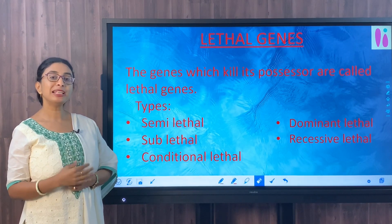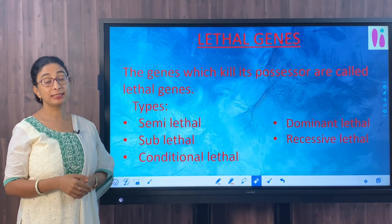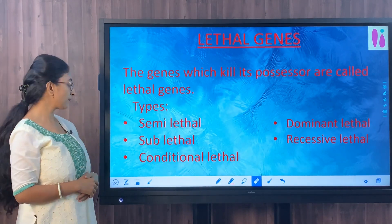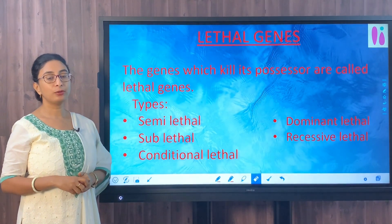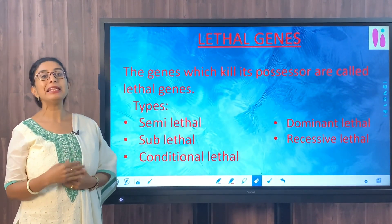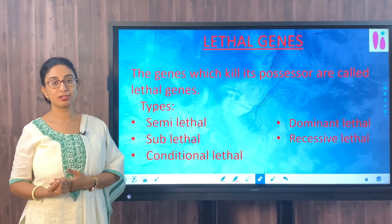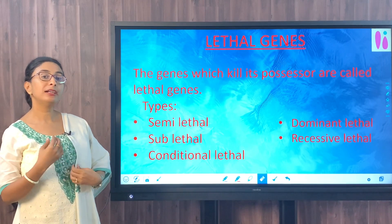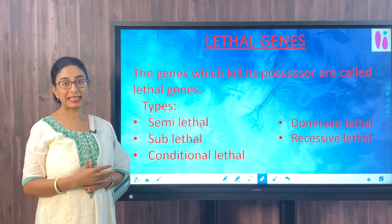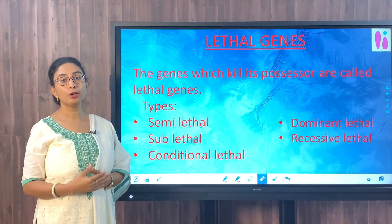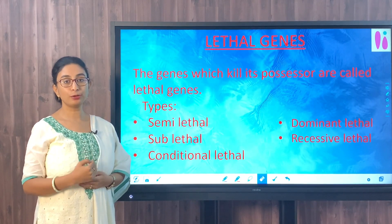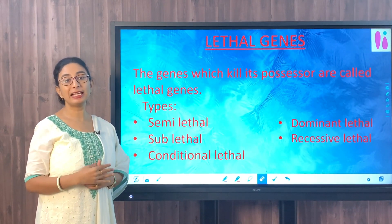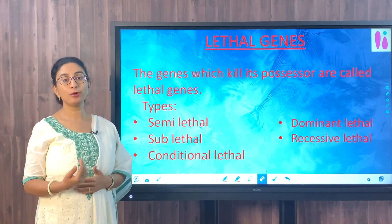Sublethal genes kill the possessor even before attaining adolescent age. Conditional lethal genes are the ones which may be lethal in one condition but not in another. For example, phenylketonuria — if these people are given a diet completely free of phenylalanine, then the expression of this gene can be controlled or delayed. That is, people who are supposed to develop phenylketonuria, if given a diet containing no phenylalanine, have a chance that the disease can be delayed or controlled.